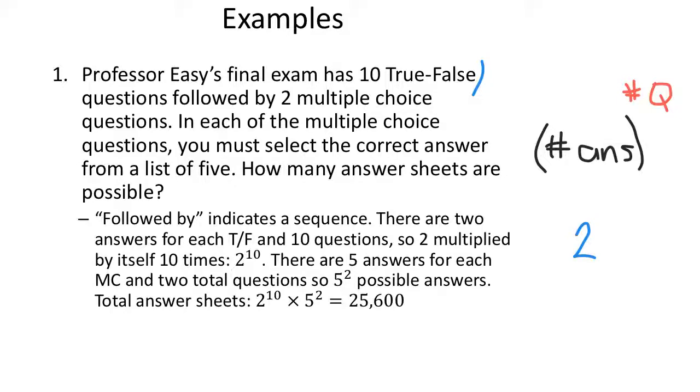And I have 10 questions with which to answer those. All right? Two to the 10th. Same thing here. There are five possible outcomes on my multiple choice, and I have two multiple choice questions, five squared. Because it's followed by, followed by is a sequence of choices, and that's why I choose to multiply.